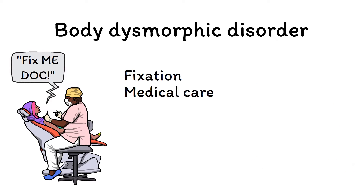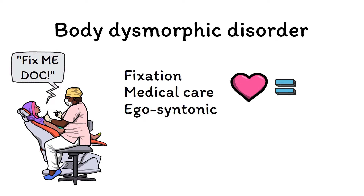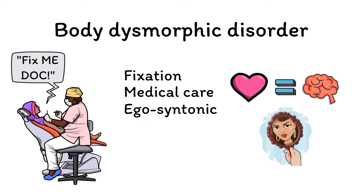Next, the 'E' will remind us that body dysmorphic disorder specifically involves an ego-syntonic thought pattern. Unlike the obsessions in textbook OCD, preoccupations about appearance in body dysmorphic disorder are ego-syntonic, and the person does not admit that their fears are extreme or excessive in any way. Importantly, body dysmorphic disorder is not just vanity — patients with this disorder want to normalize their appearance, as opposed to vanity where the goal is to make yourself look better than others.